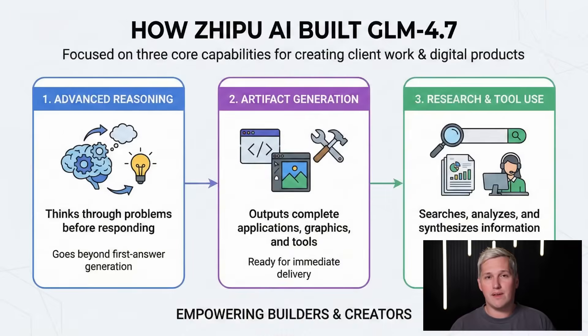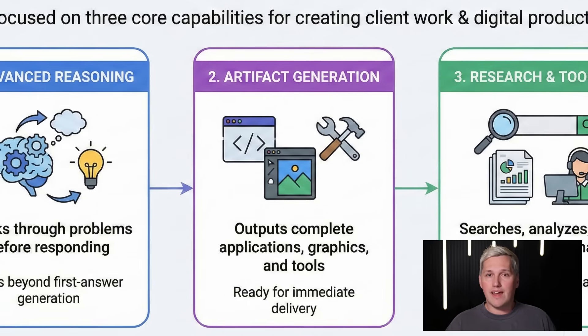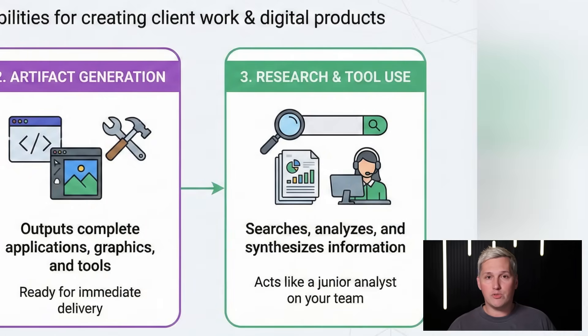Here is how Zipu AI built GLM 4.7. They focused on three core capabilities that matter for anyone trying to create client work or build digital products. First, advanced reasoning, where the model actually thinks through problems before responding instead of just generating the first answer. Second, artifact generation, where it can output complete applications, graphics, and tools you can deliver immediately. Third, research and tool use, where it can search, analyze, and synthesize information like a junior analyst on your team.